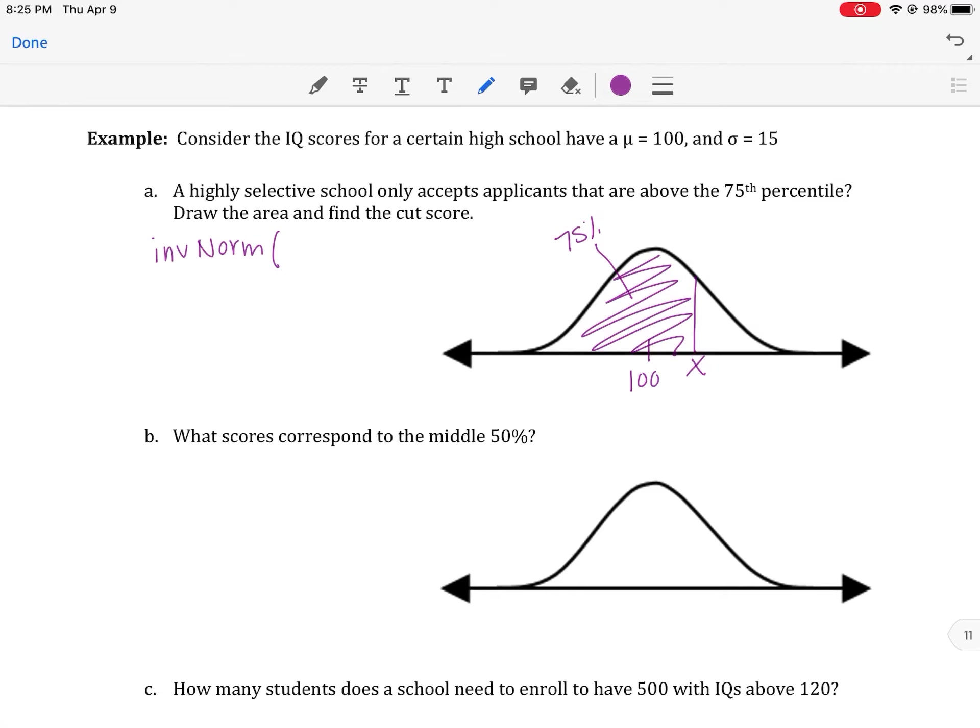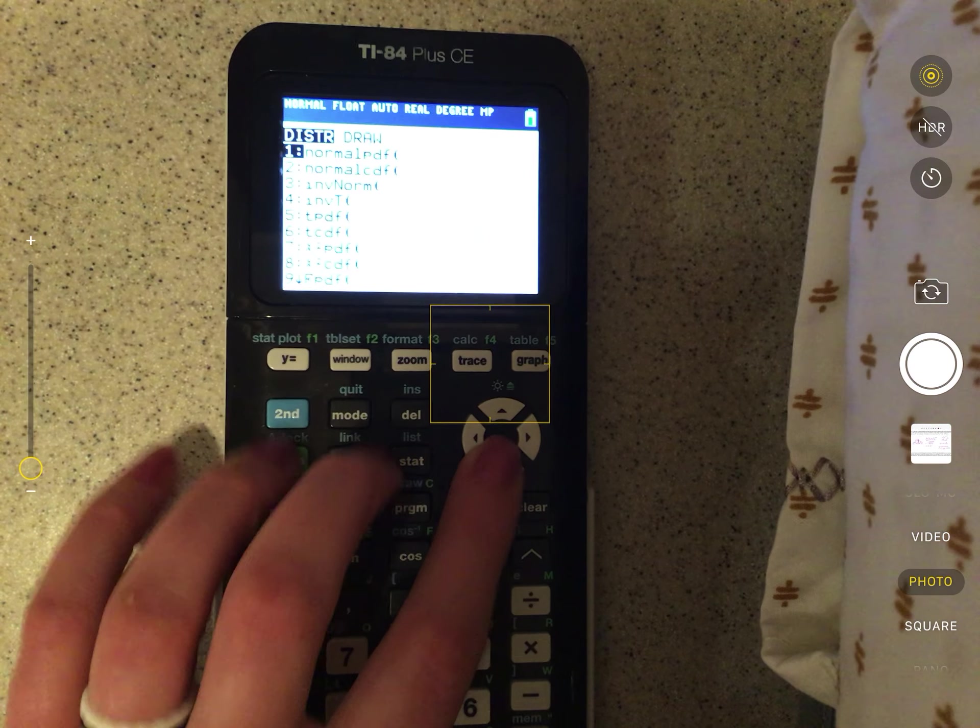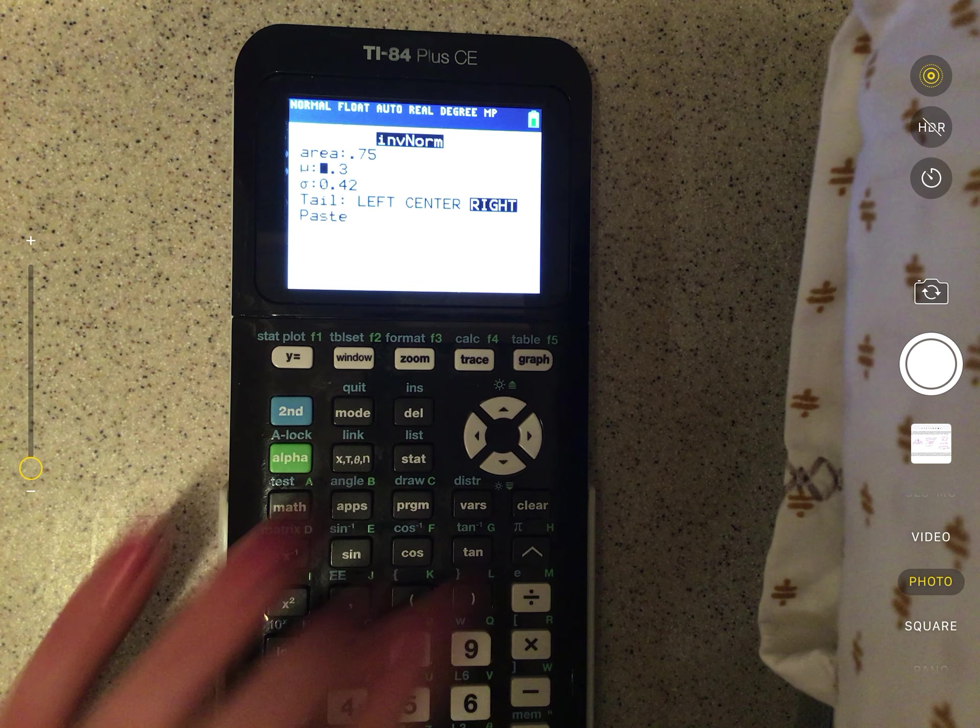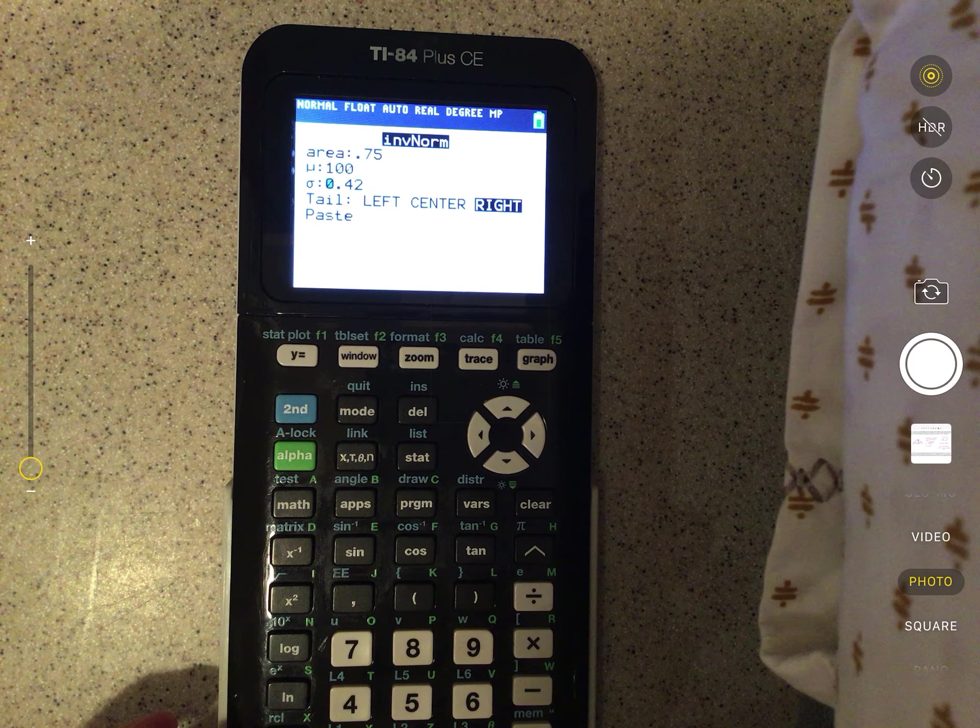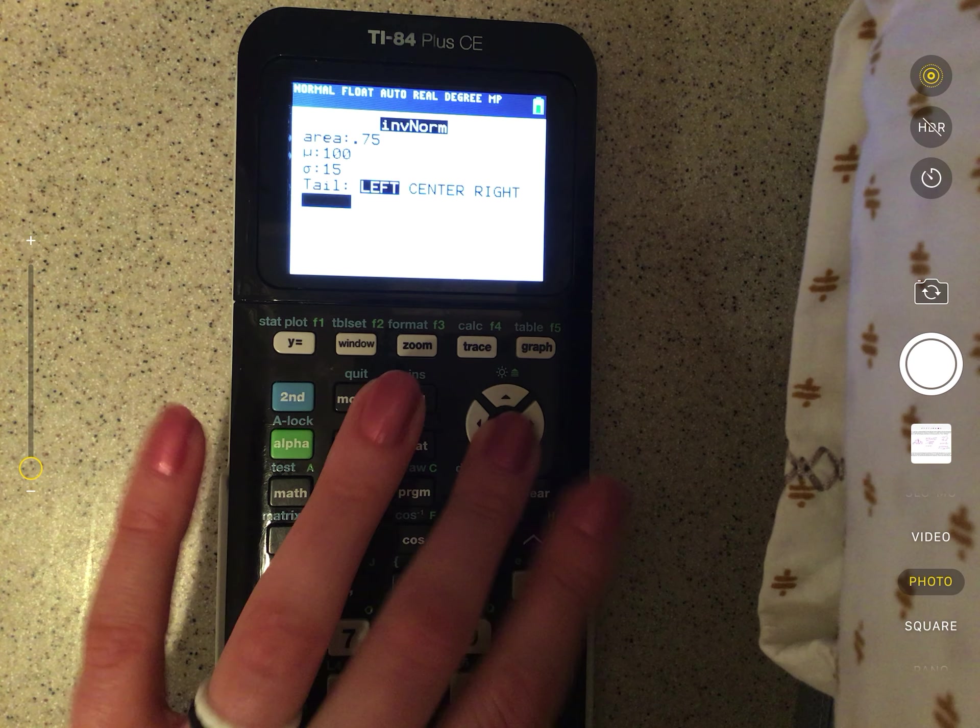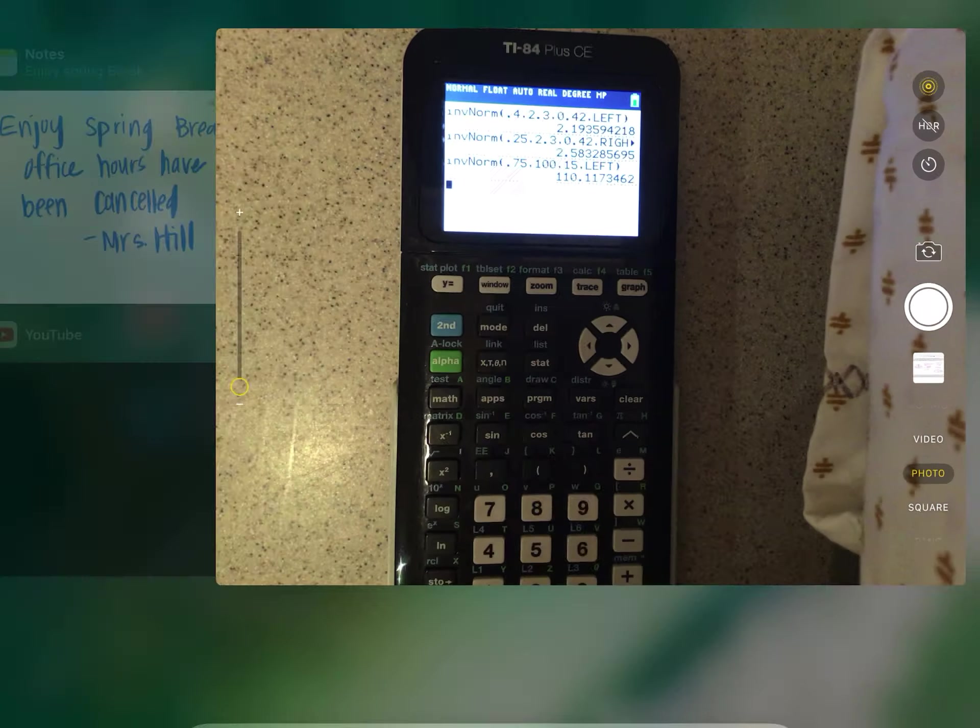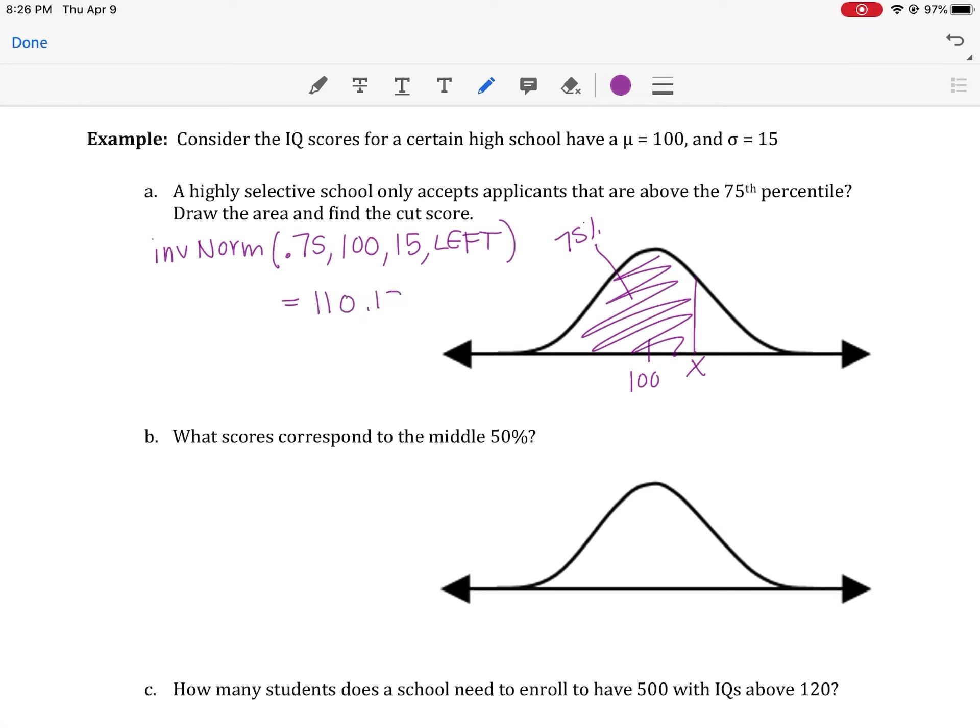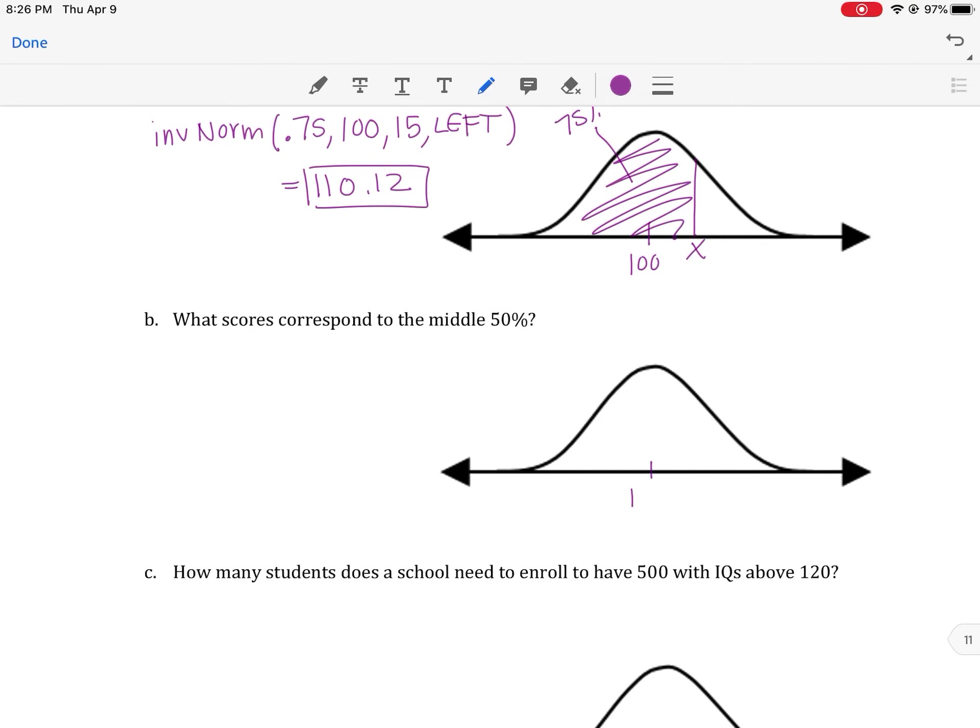The first thing it asks for is the area, which is 75%, so we're going to put 0.75. Then it asks for the mean of 100. Then it asks for the standard deviation of 15. And then, in this case, we're doing to the left. So let's see what that looks like on the calculator. We go second, VARs, go down to number three. We had 75%, a mean of 100, a standard deviation of 15, and then we're doing left. So their IQ would have to be 110.12 as the cutoff score.